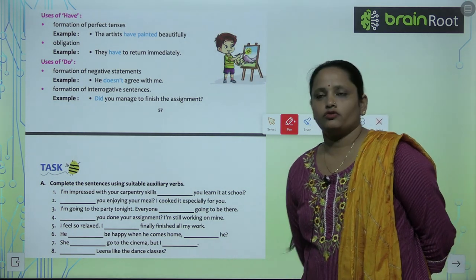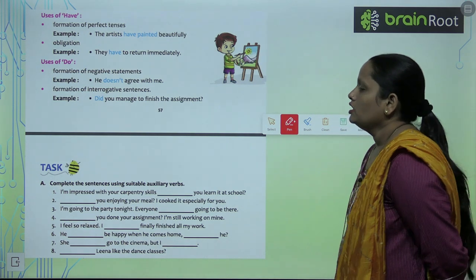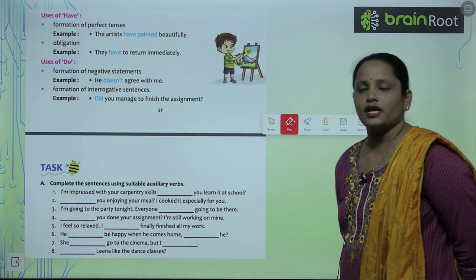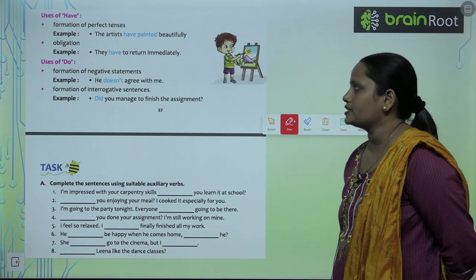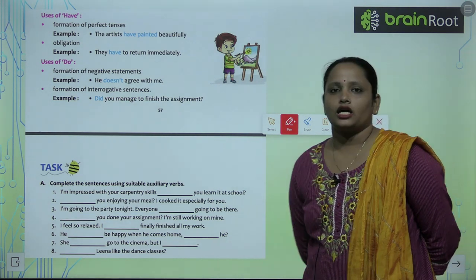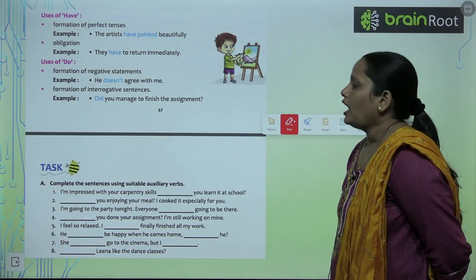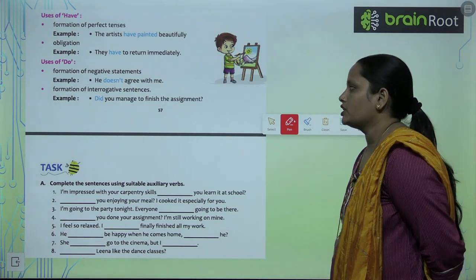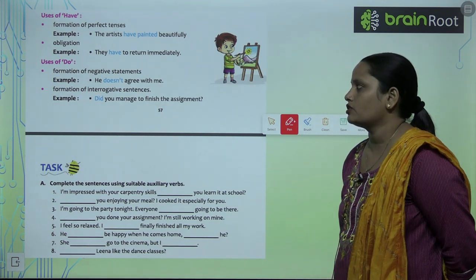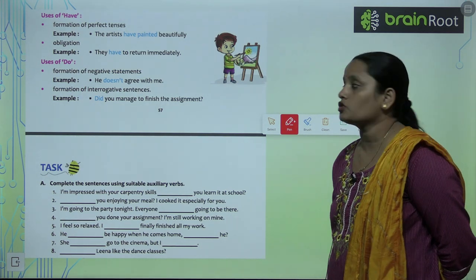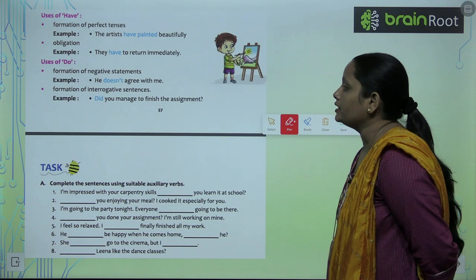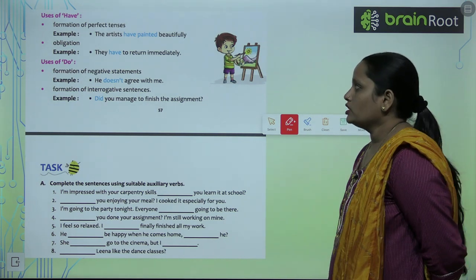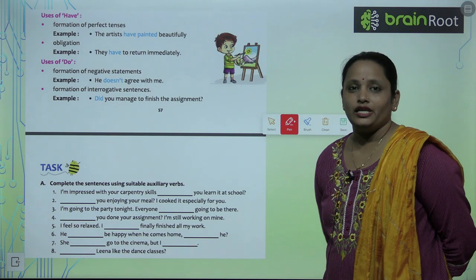Now the use of do is: Formation of negative sentences — negative sentence बनाने के लिए हमें do की ज़रूरत पड़ती है. For example: He doesn't agree with me. And formation of interrogative sentences — interrogative sentence को बनाने के लिए भी do की ज़रूरत पड़ती है. For example: Did you manage to finish the assignment?